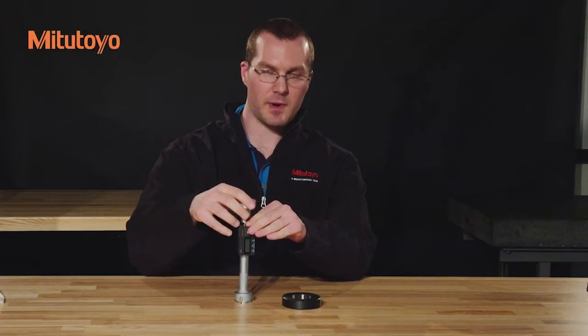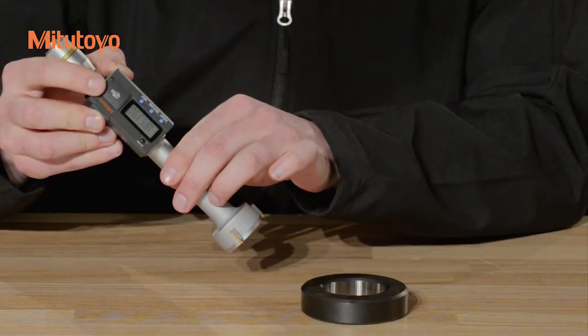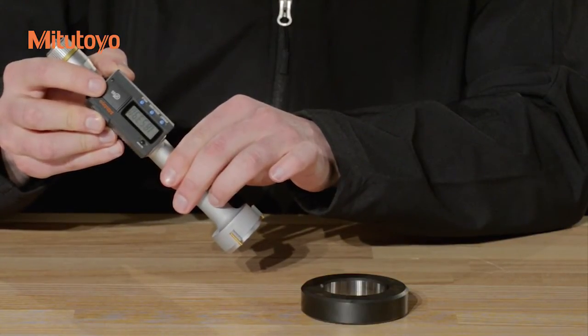Make sure that your gauge powers on. If it does not, replace the SR44 battery. When replacing the battery cap, make sure that the seal is properly seated.